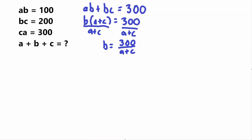Now we have a value for B, and I'm going to plug this into an equation that has B. So A times B is equal to 100, and now we have A times 300 over (A plus C) — because this is our new value for B — equals 100.